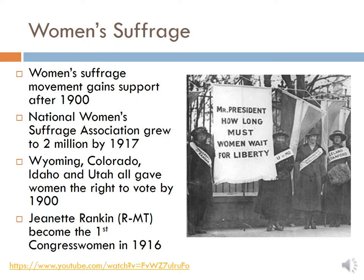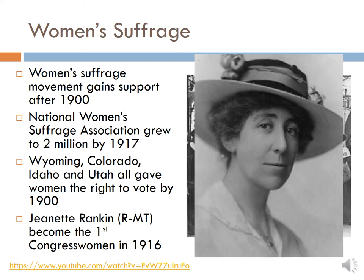Women's protesting in front of the White House was very controversial because the country was in the middle of a world war, but women saw it as a good opportunity to be heard, especially given how many were contributing to the war effort. Ultimately, President Woodrow Wilson, in response to these massive suffragette protests, gave in and supported the passage of the 19th Amendment to the U.S. Constitution, which gave women the right to vote and went into effect in 1920.